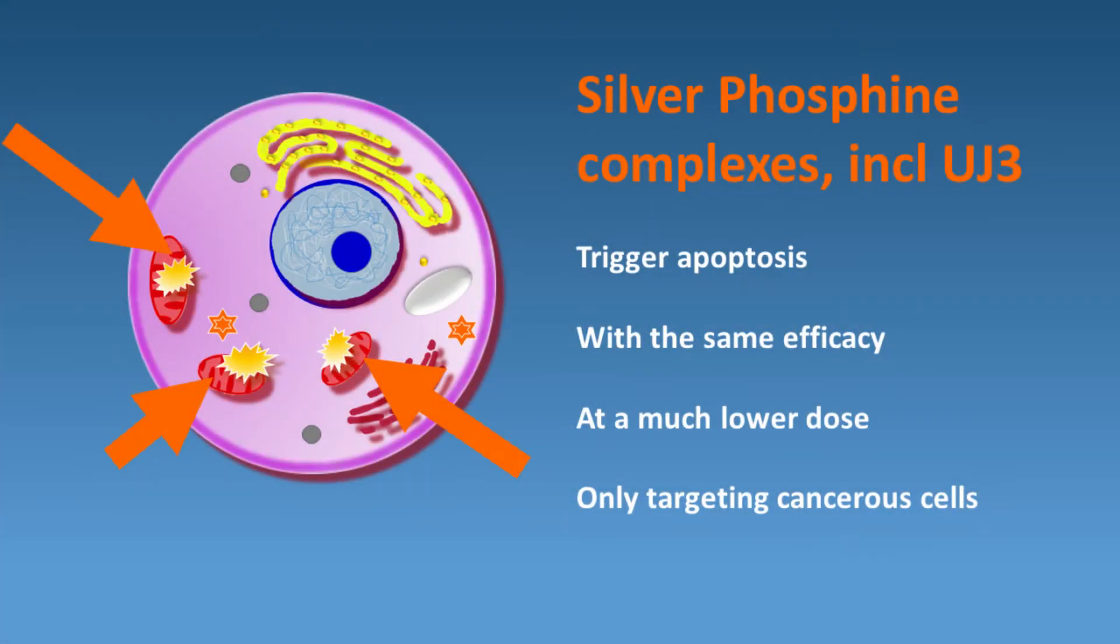The family of silver phosphine complexes we tested, including UJ3, also trigger apoptosis, and with the same efficacy. At a much lower dose, only targeting cancerous cells.